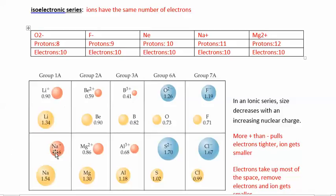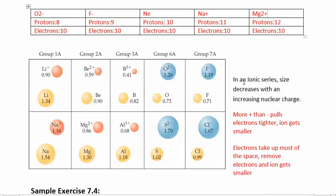Sodium has 11 protons, so it has a slightly less powerful pull than magnesium, making it a little bit bigger. Oxygen and fluorine are going to be even bigger — oxygen only has 8 protons and 10 electrons, so it has the weakest pull and will be the biggest. In an isoelectronic series, size decreases with increasing nuclear charge. Whoever has the most positive charge is going to be the smallest, and whoever has the most negative charge is going to be the biggest, because electrons are what's really taking up space in the ion, and the atom expands whenever it gains electrons.